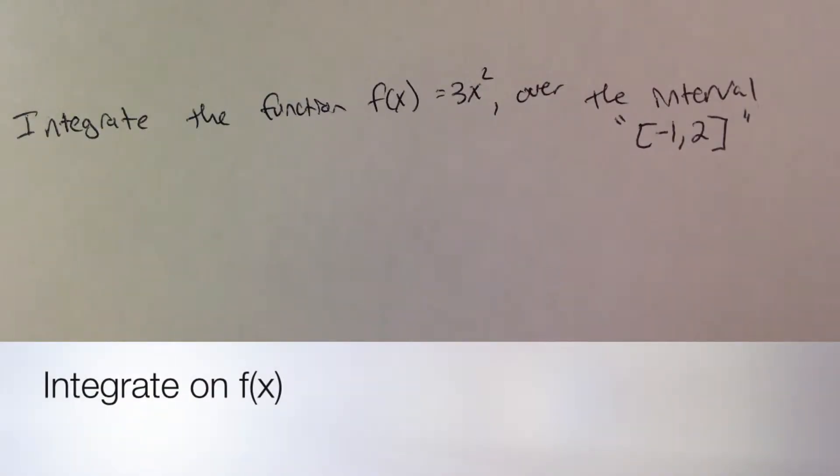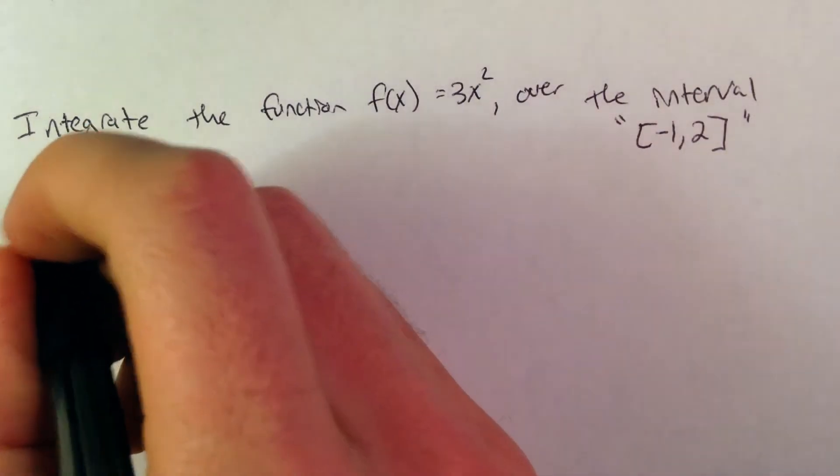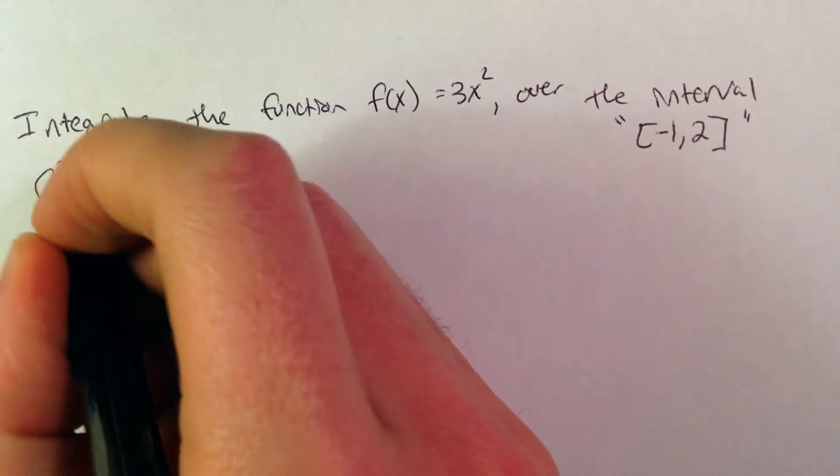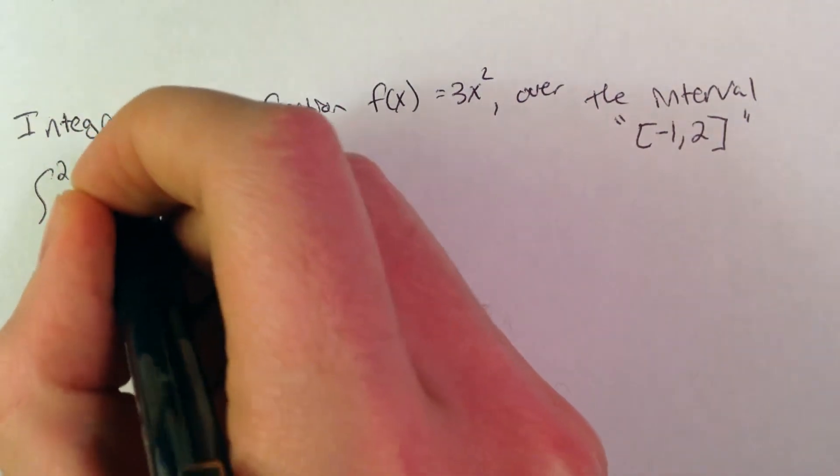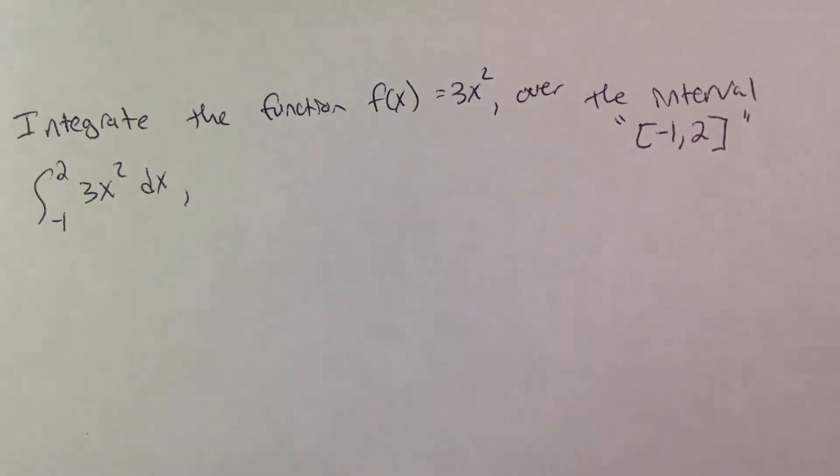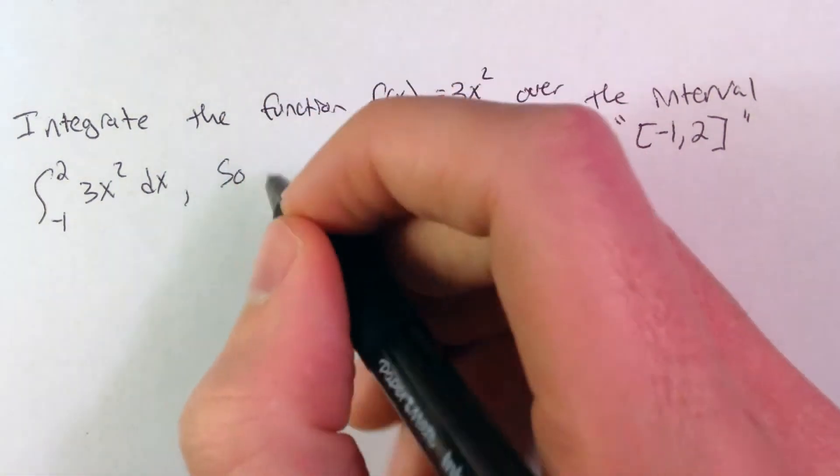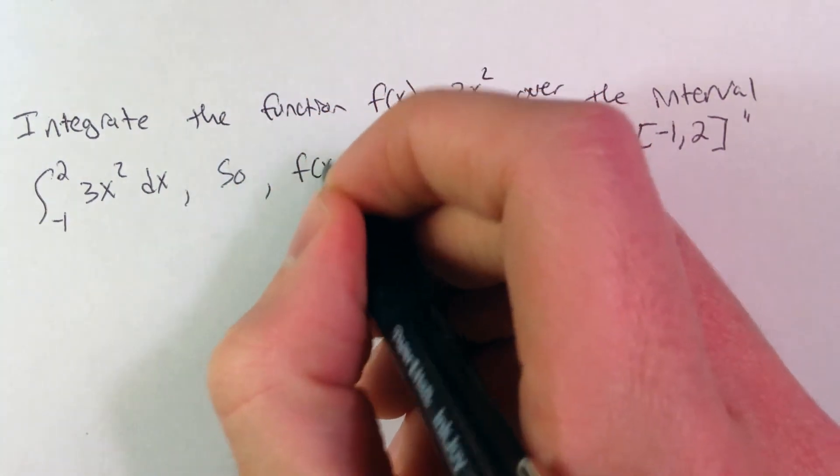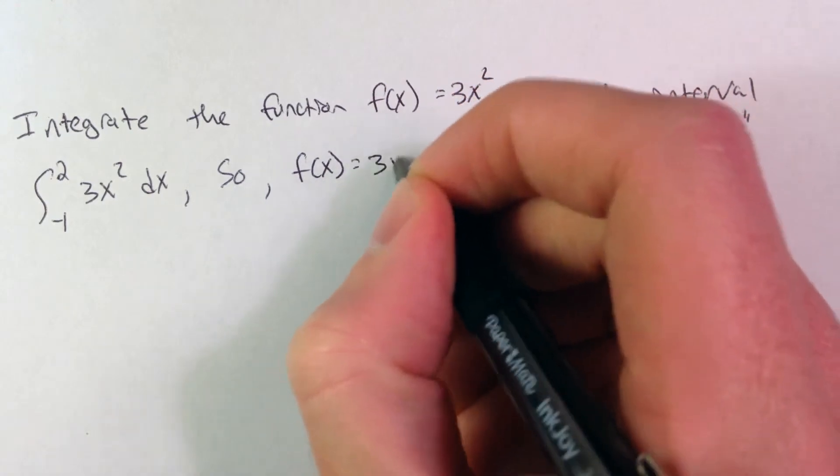If my goal is to integrate the function f of x equals 3x squared over the interval from negative 1 to 2, I would see that as this symbol. So my first goal is just to label the function f of x equals 3x squared.